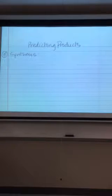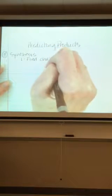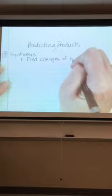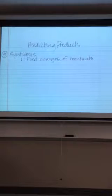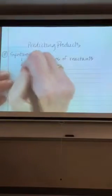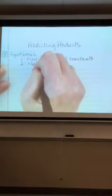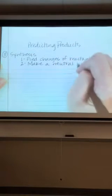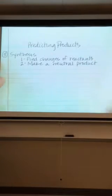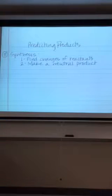We follow the same two steps every time we predict products of a synthesis reaction. Step one is going to be find the charges of the reactants. Remember that charges are oxidation numbers. Plus 1, plus 2, plus 3, plus 4, minus 3, minus 2, minus 1, 0. Then our second step is going to be to make a neutral product. What does neutral mean? It's no charge, but it's total equals zero.